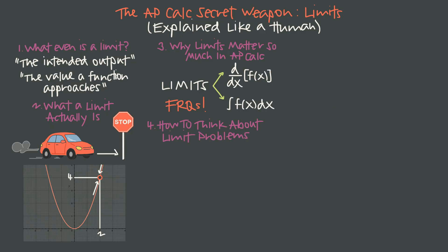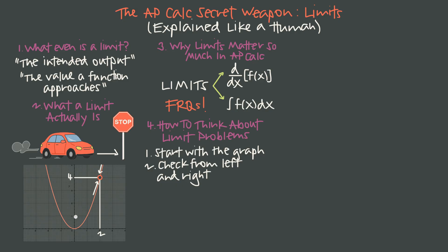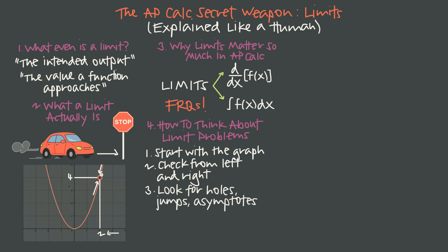When thinking about limit problems, start with the graph if you have one. Check the left and right-hand limits by tracing along the graph toward the value you're approaching. For the limit at x equals 2, trace from the left side and from the right side and see which value you're approaching from both sides. If you approach the same value from both sides, that's the limit. Also look for discontinuities like holes, jumps, and asymptotes.